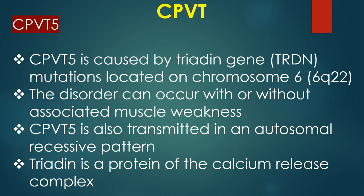CPVT5 is caused by triadin gene mutations located on chromosome 6. The disorder can occur with or without associated muscle weakness, and CPVT5 is transmitted in an autosomal recessive pattern. Triadin is a protein of the calcium release complex.